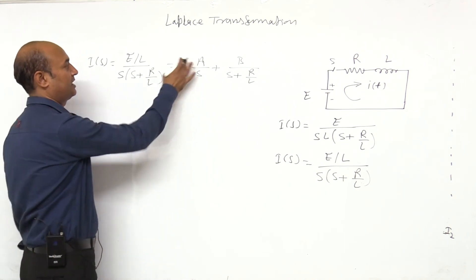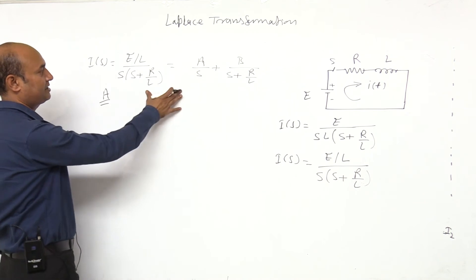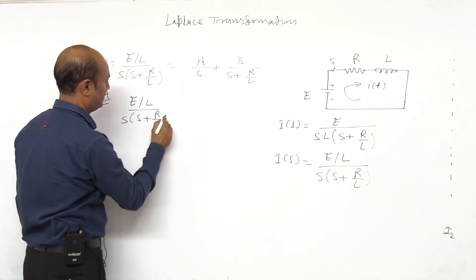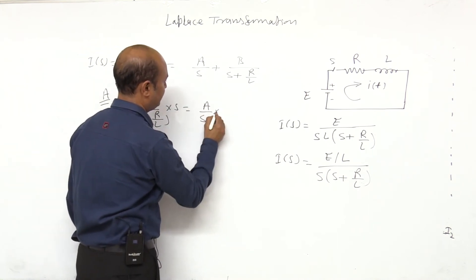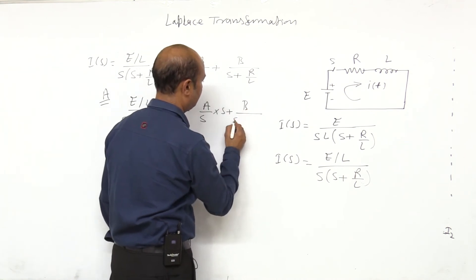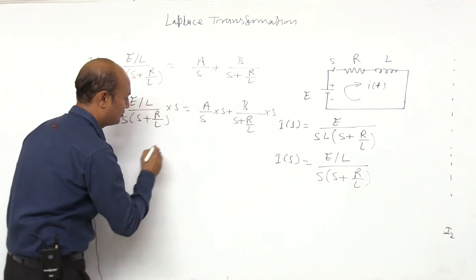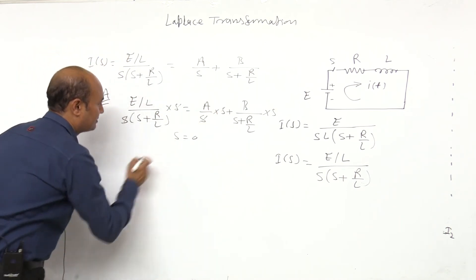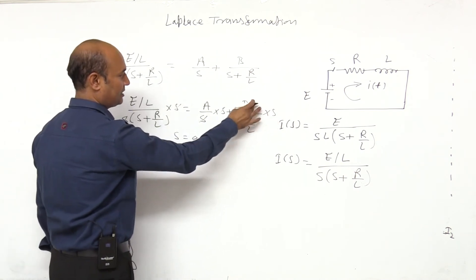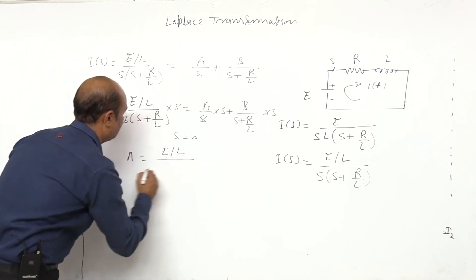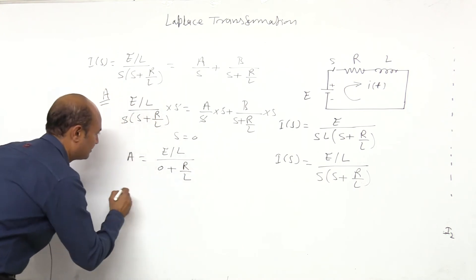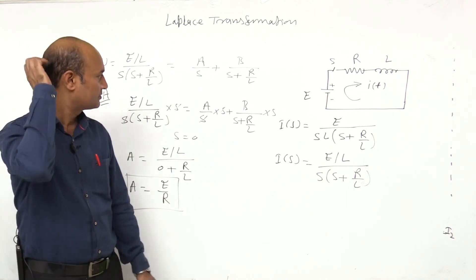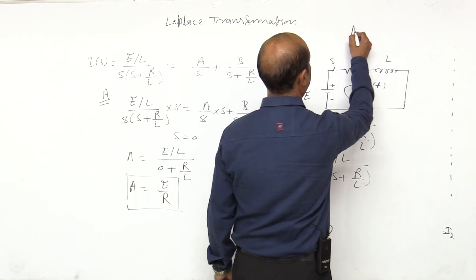Now, to find value of A: multiply the whole equation by S. So (E/L) / (s + R/L) = A + B·s/(s + R/L). Put S = 0: S cancels, and A = (E/L) / (0 + R/L) = (E/L) / (R/L) = E/R. So A = E/R.